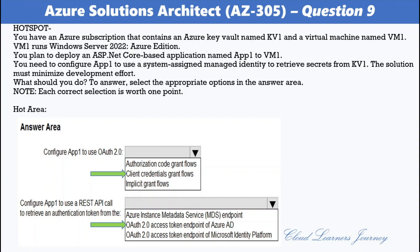In the client credentials flow, permissions are granted directly to the application itself by an administrator. When the app presents a token to a resource, the resource enforces that the app itself has authorization to perform an action, since there is no user involved in the authentication.